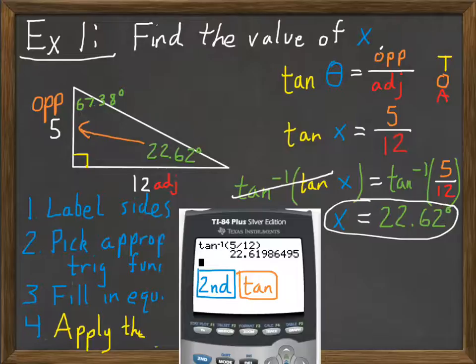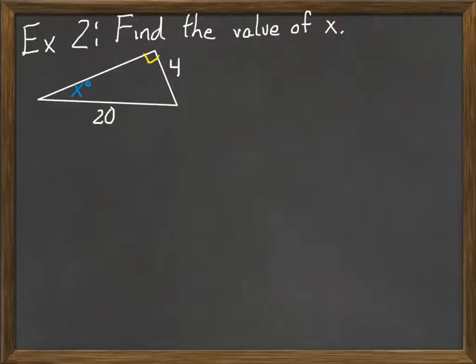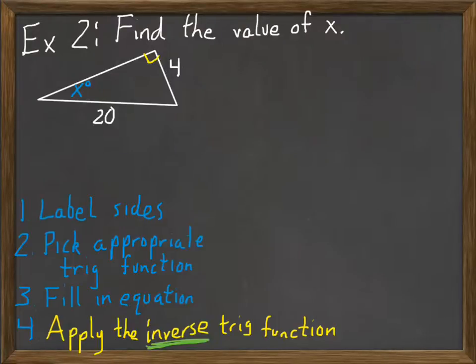So to help you get the point, let's walk through one more example. Once again, we'll find the value of x, which is an angle. Here's our triangle. We've got a side of 4 and a side of 20. I'll go ahead and write out the steps here again so that you can reference them. You've already got them written down, but that way you can look at it while I'm applying them.